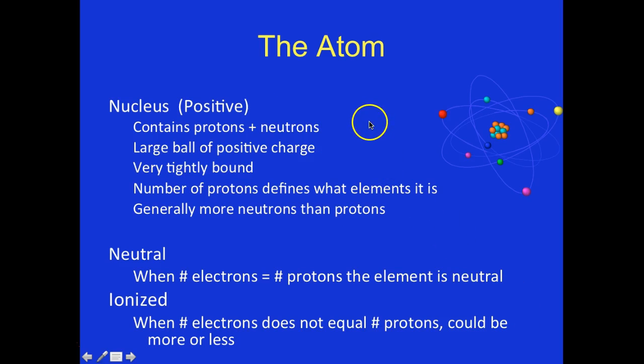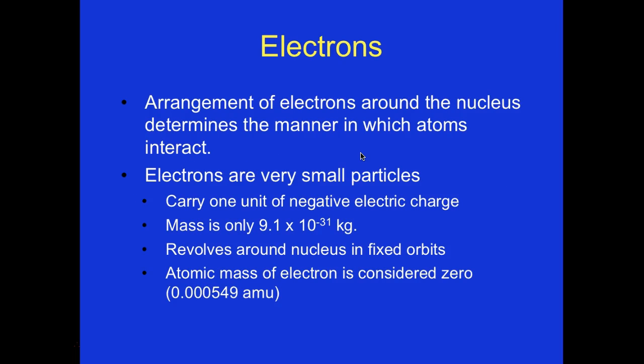The nucleus is positive, contains protons and neutrons, is a large ball of positive charge, and is very tightly bound. The number of protons determines what the element is; generally there are more neutrons than protons. When neutral, the number of electrons equals the number of protons. When ionized, the number of electrons does not equal the number of protons — it could be more or less. Electrons carry one unit of negative charge; their mass is 9.1 × 10⁻³¹ kg. The atomic mass of an electron is considered zero (actually 0.000549). Electrons revolve around the nucleus in fixed orbits.